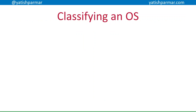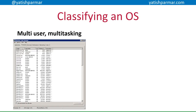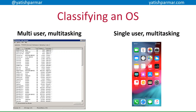When classifying an operating system — and we've covered eight of the nine types so far — bear in mind that an operating system can be of multiple types. Windows Server, for example, is multi-user and multitasking, with different users logged in running processes and the OS allocating resources to each. A single-user multitasking OS, such as iOS, has one person logged in with the OS running multiple tasks for that one user. It's very rare to see an OS as just one type — it's usually a blend of several classifications.